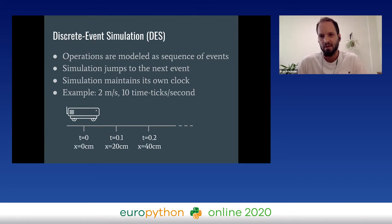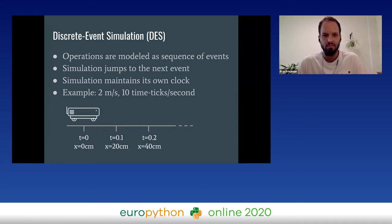Now let's talk about how we run the simulation. The approach we use is called discrete event simulation. In this approach, continuous operations are modeled by instant events. For example, if we want to simulate an elevator, the events can be: door is open, elevator arrived, button pressed, and so on. The simulation maintains its own clock and immediately moves from one event to the next, and that's how time can run faster than real time.